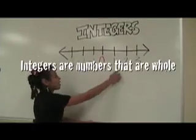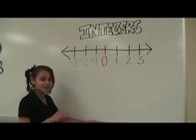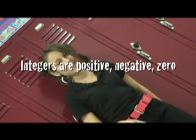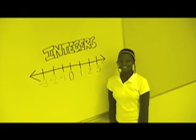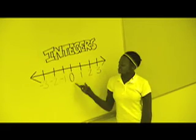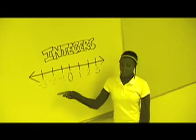Integers are numbers that are whole. No decimals, no fractions, listen up. Integers are positive, negative, zero. When it comes to solving math, I'm a hero. You can place integers on the number line. Playing in class, there's no time. Zero in the middle, negative goes left. Positive goes right, cause there's nothing left.